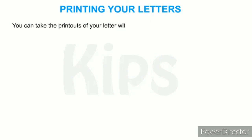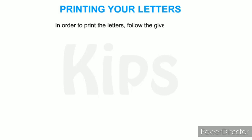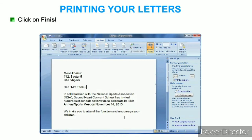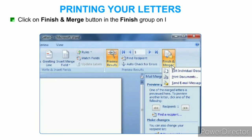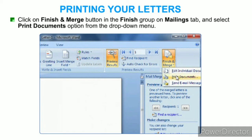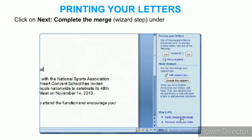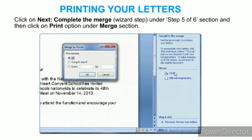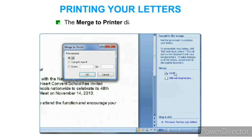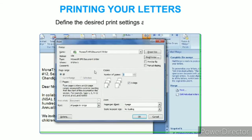To print your letters with the merged data, click the Finish & Merge button in the Finish group on the Mailings tab and select Print Documents from the drop-down menu, or click Next: Complete the Merge under Step 5 of 6 and then click Print under the Merge section. The Merge to Printer dialog box will appear. Define the desired print settings and click OK.